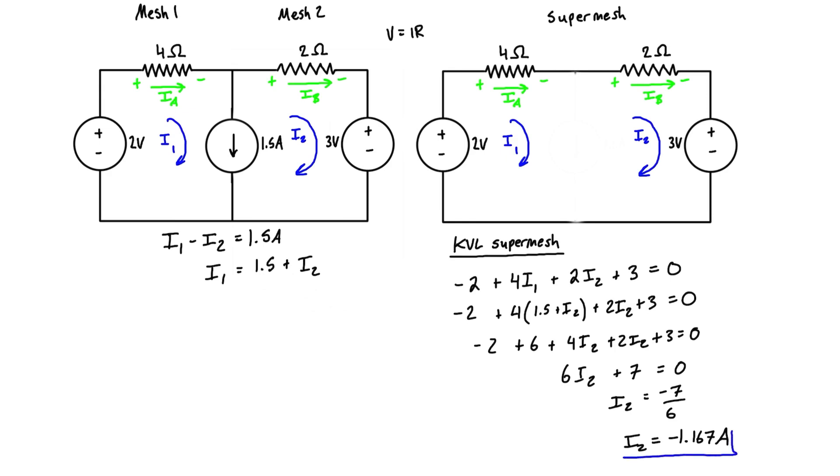So we can take this value for I2, and we can just plug it right in here where we have I2 in this expression. So we have I1 is just equal to 1.5 plus negative 1.167, or in other words, I1 is just equal to 0.333 amps.